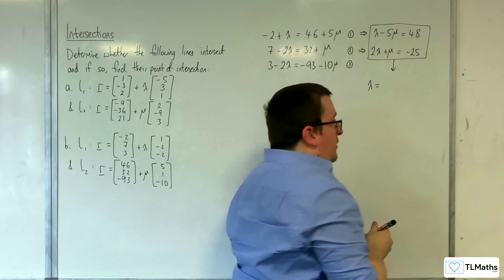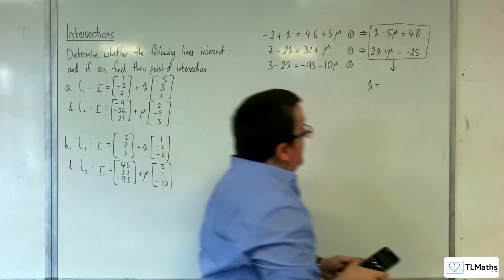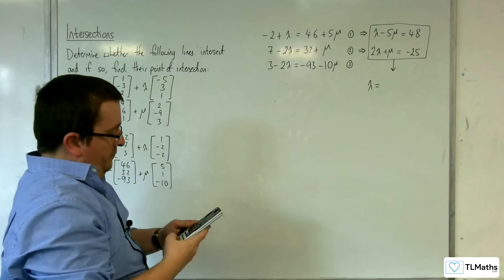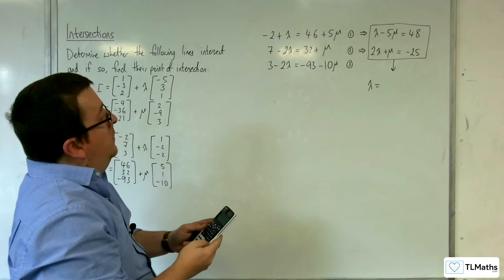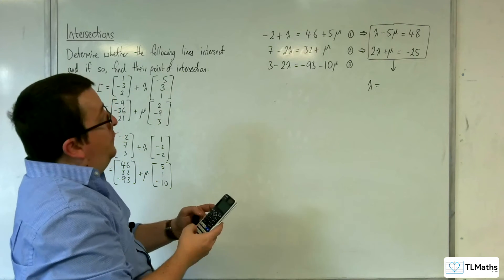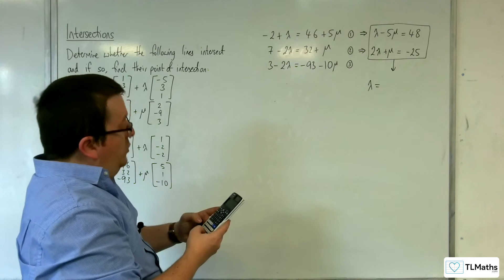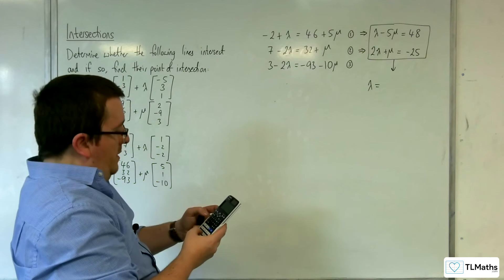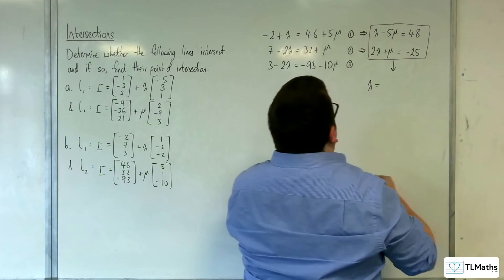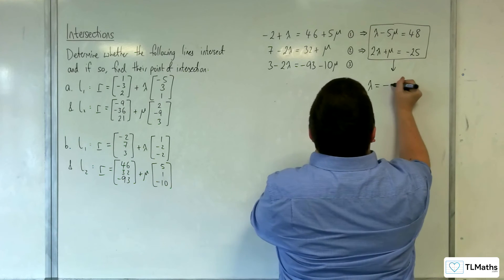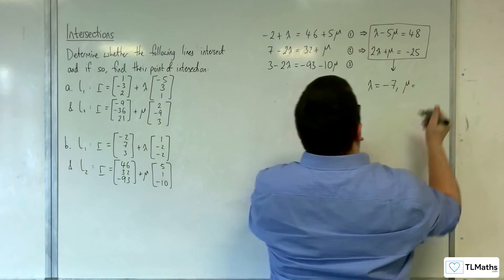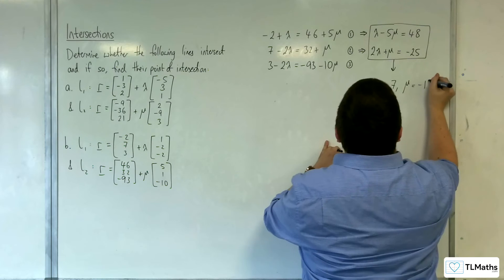I'm just going to use the simultaneous equation solver to do it: 1, minus 5, 48 and 2, 1, minus 25. We should get λ is minus 7 and μ is minus 11.